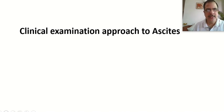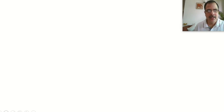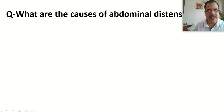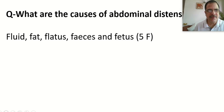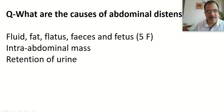Let's discuss a clinical case of ascites. A 50-year-old patient presented with abdominal distension with a history of chronic alcohol intake. When an alcoholic patient presents with abdominal distension, we should know the causes. The causes of abdominal distension are the 5Fs: fluid (ascites), fat (obesity), flatus, feces, and fetus. Besides these, causes include intra-abdominal mass like malignancy or urinary retention. The most important cause is fluid, i.e., ascites.